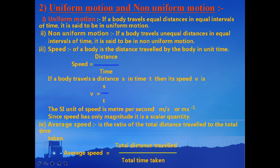Speed is the rate of distance covered per unit time. We can calculate the speed of an object by dividing the distance travelled by the time taken. So if a body travels a distance of s meters in t seconds, then its speed v = s ÷ t. The SI unit of speed is meter per second. Since speed has only magnitude, it is a scalar quantity.